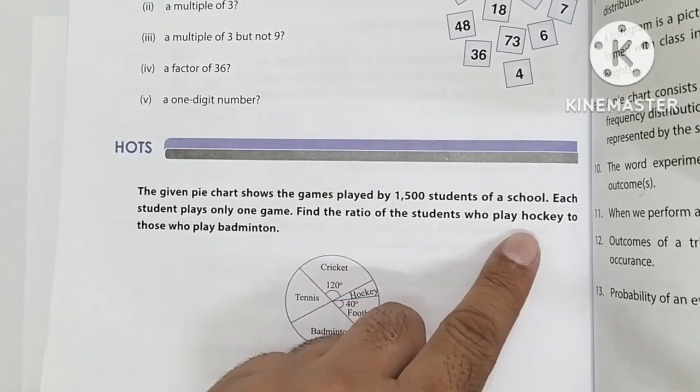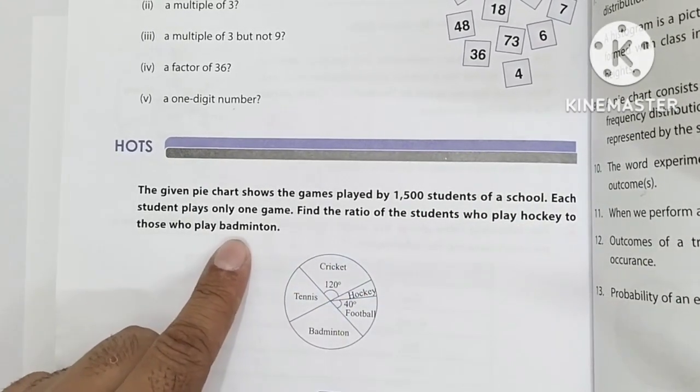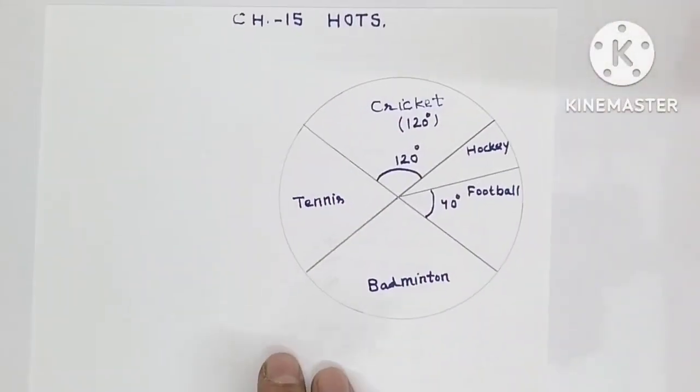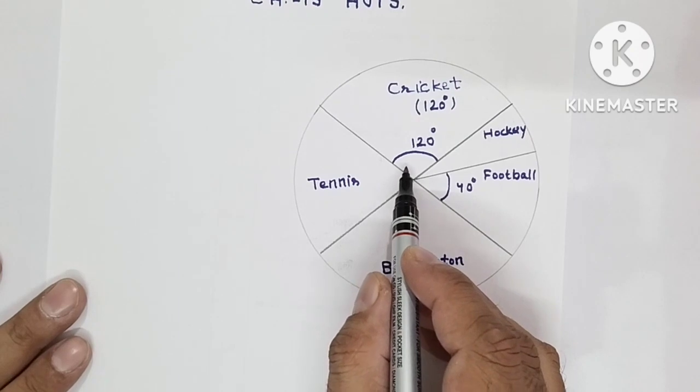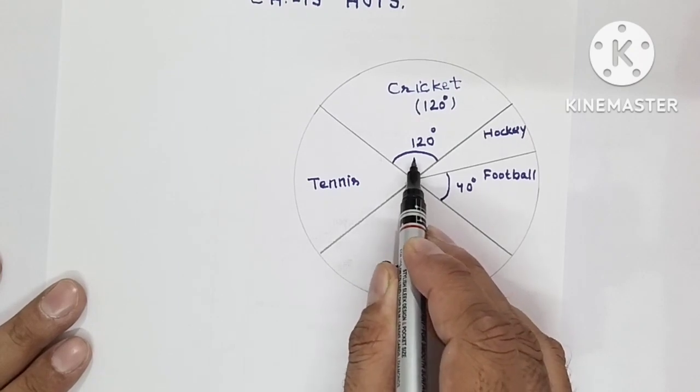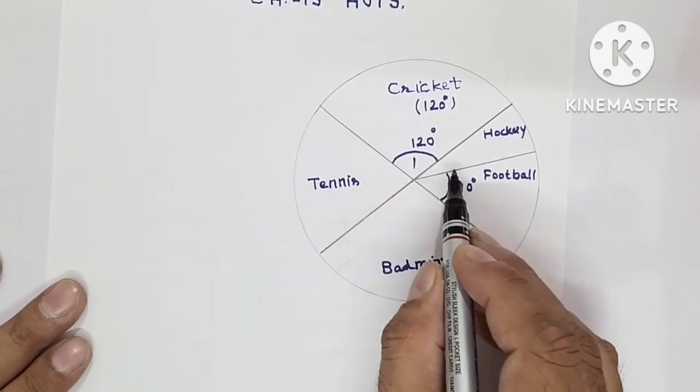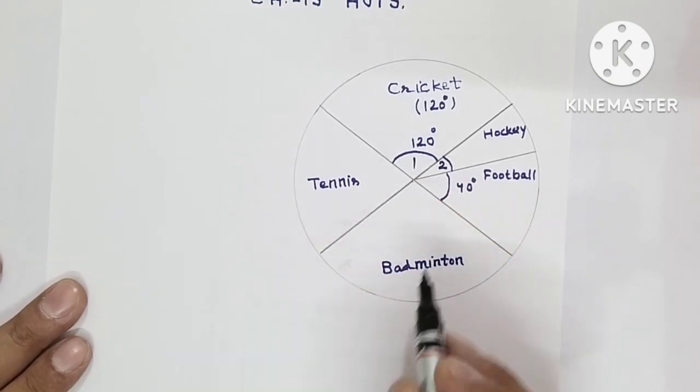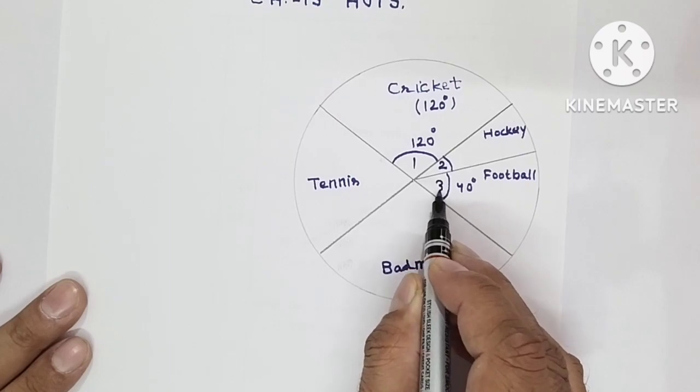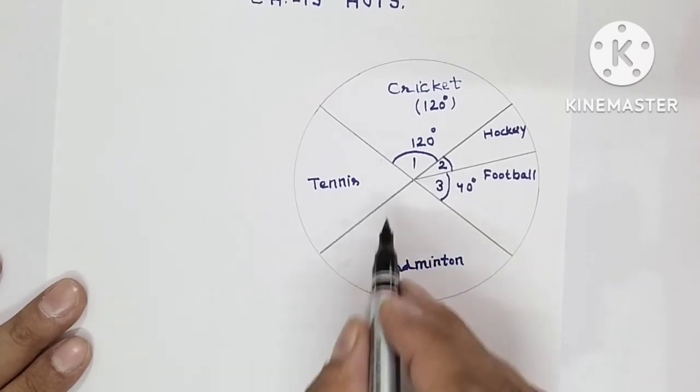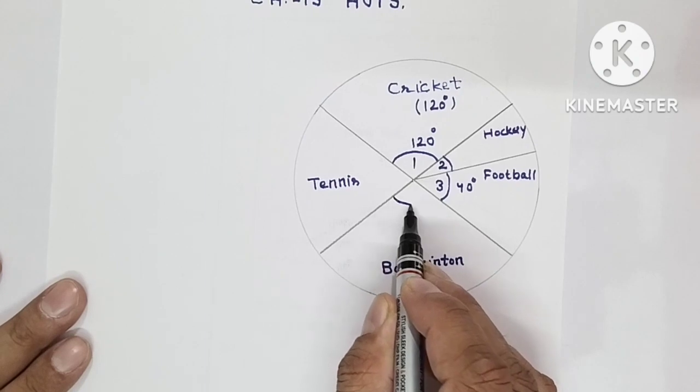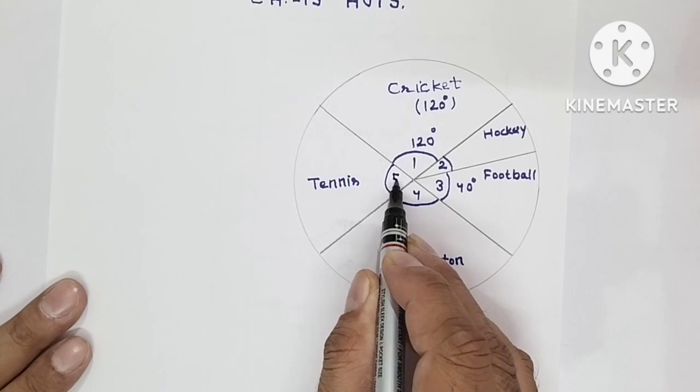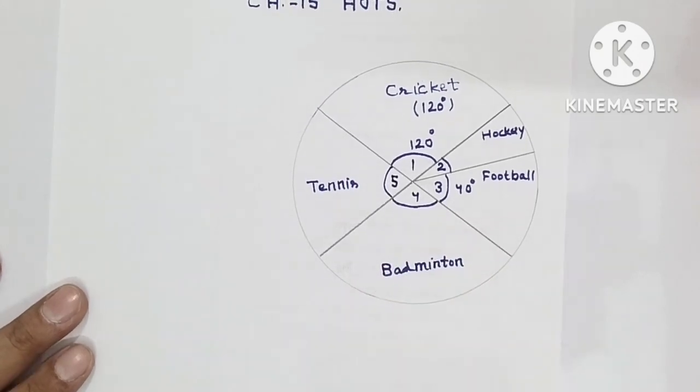So, ratio of students who play hockey upon students who play badminton. See how we will do this question. This is 120 degree angle. Give it number one. We are not given hockey's angle, give it number two. Football you give number three. Badminton's angle is also not given, make it angle four. And this one you make number five.